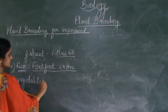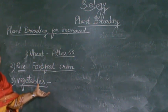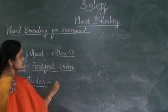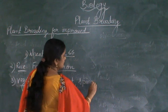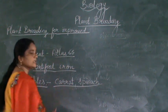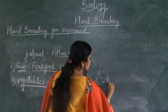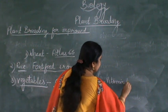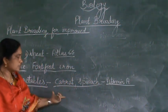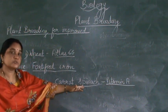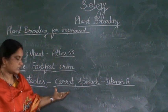Certain vegetables have also been modified and developed for increasing public health — to decrease and prevent deficiency diseases. Vegetables like carrot and spinach are being developed. These are enriched with vitamin A, so they give a high quantity of vitamin A. These carrot and spinach species are being bred by breeding techniques which result in a high quantity of vitamin A.